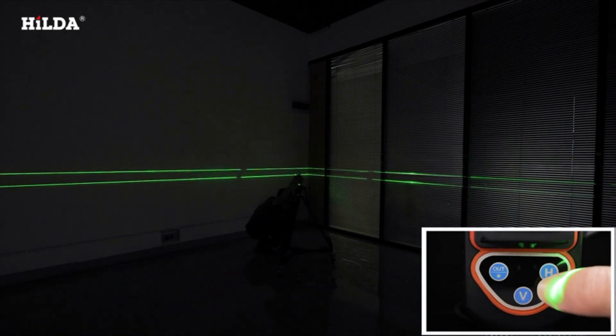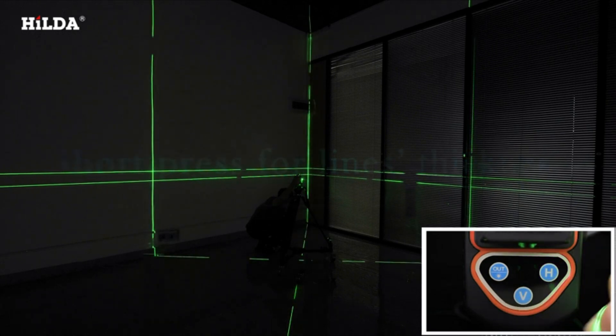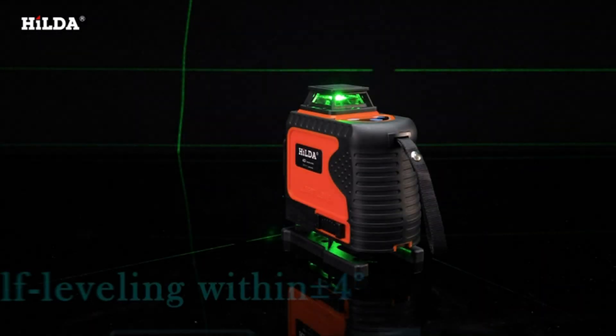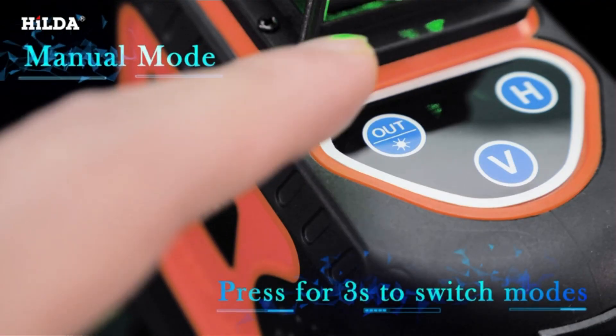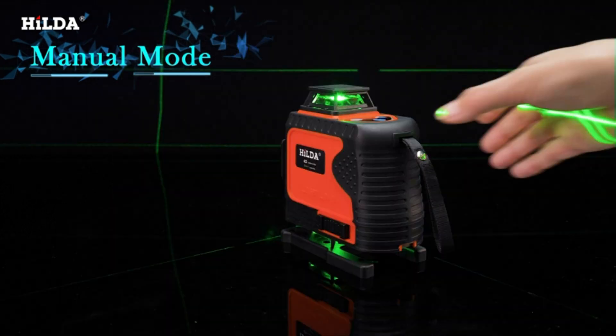Green laser level with two times brighter than red lasers, under the same lighting conditions, the green line is easier to be found than the red line. In addition, HILDA green laser level has 10 grades about the thickness of line, you could choose it all by yourself.